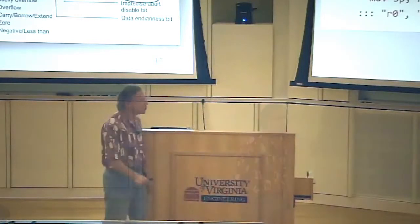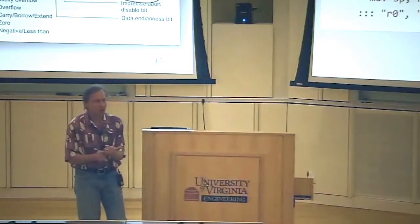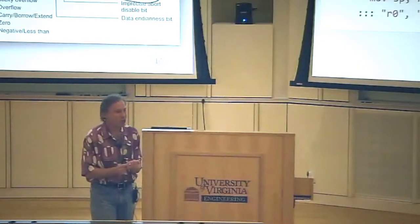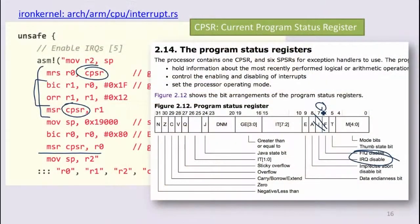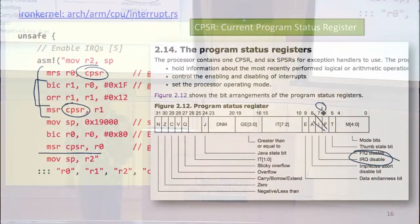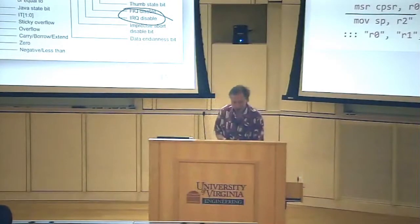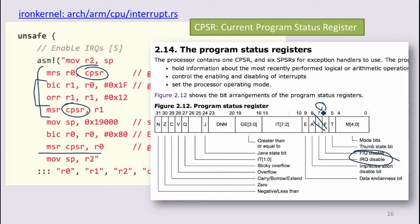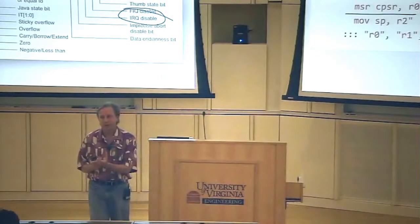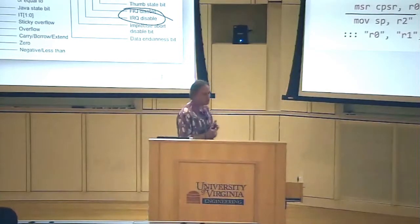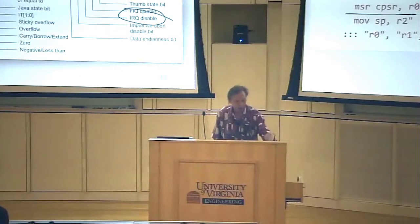Should user-level code be able to change those bits in this register — to be able to turn interrupts off? The answer is no. If you can turn interrupts off as a user-level program, you're preventing the kernel from getting control of the machine back. The only way the kernel gets control back is when an interrupt happens. If a user-level program can modify those bits to turn off interrupts, it owns the machine. Once you've turned off interrupts, the scheduler is not going to get to run again. So we certainly can't let user-level programs do that. But this is in the kernel, so it's okay.